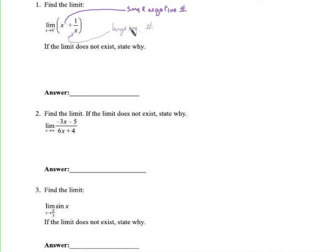Saying a large negative number is kind of a funny thing, because the further to the left you get on the number line, technically the smaller the number is. But we made a number that's large in magnitude and it's to the left of 0, getting farther and farther to the left — meaning more and more negative, meaning we're going towards negative infinity. The limit doesn't exist, and it's because the limit is negative infinity.